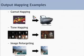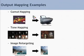In computer graphics, we have already seen a number of these examples and developed algorithms for output mapping. We have developed output mapping algorithms to map color to the capabilities of a given printer. Tone mapping operators map high dynamic range images to low dynamic range displays. And image retargeting algorithms remap high resolution images to the capabilities of display devices with lower resolution.